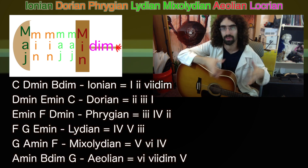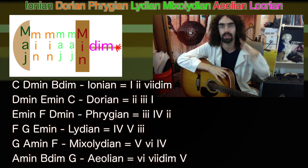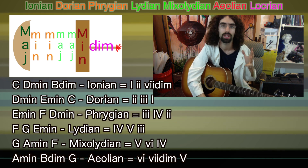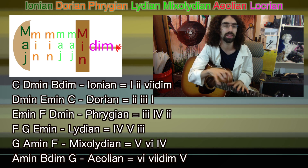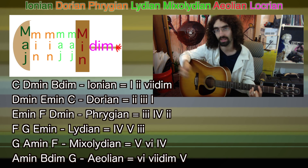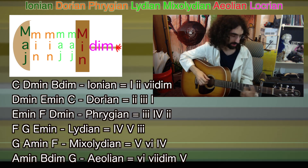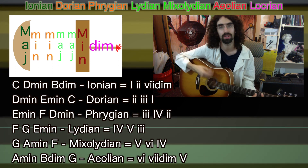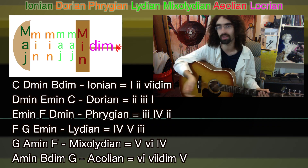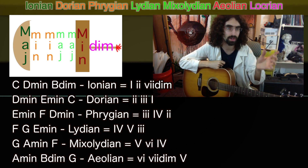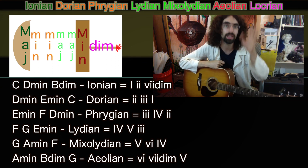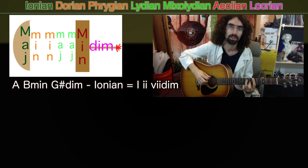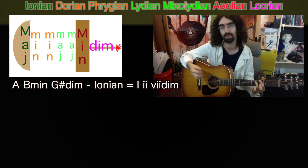Let's take these examples in C major and turn them into formulas using Roman numeral notation, so you can bring these chord progressions into any other key. For C Ionian, we had one major going to two minor, going to seven diminished, back to one. C is the one chord, D minor is the two chord, B diminished is the seven diminished chord. If we move to A major, we'd still go from the one chord to the two minor to the seven diminished, but now one is A, two minor is B minor, and seven diminished is G sharp diminished — so: A, B minor, G sharp diminished, A.